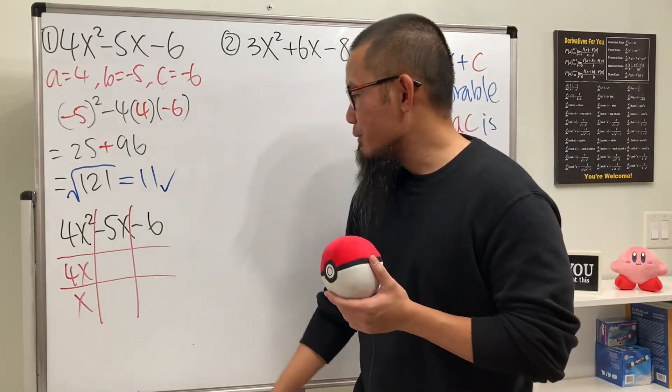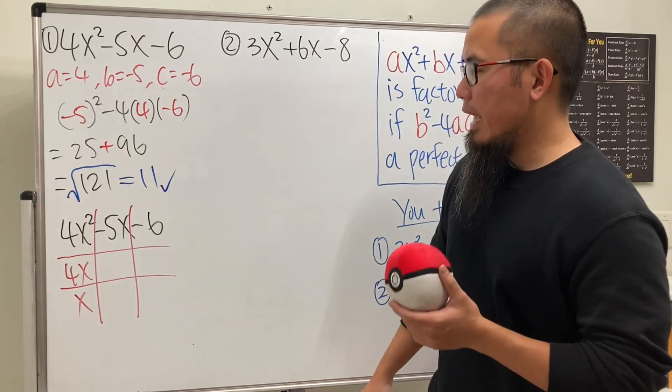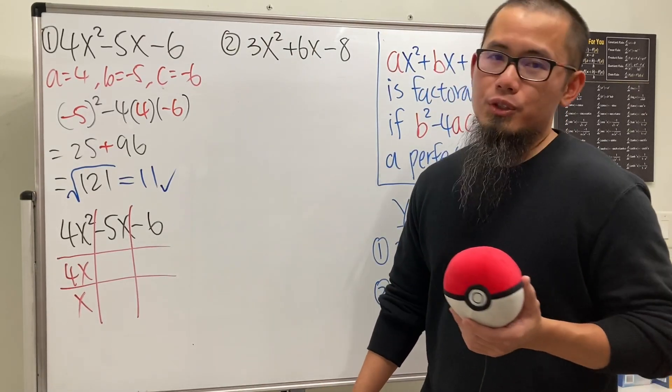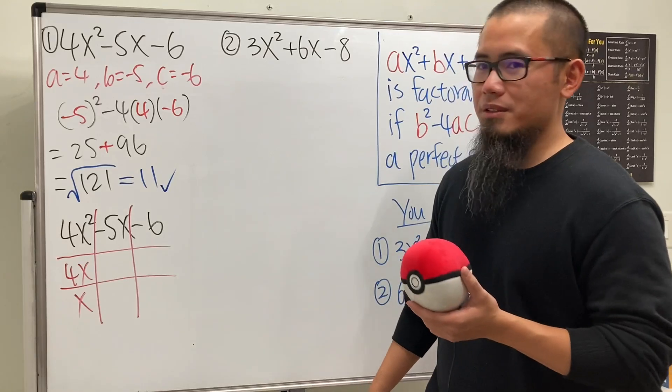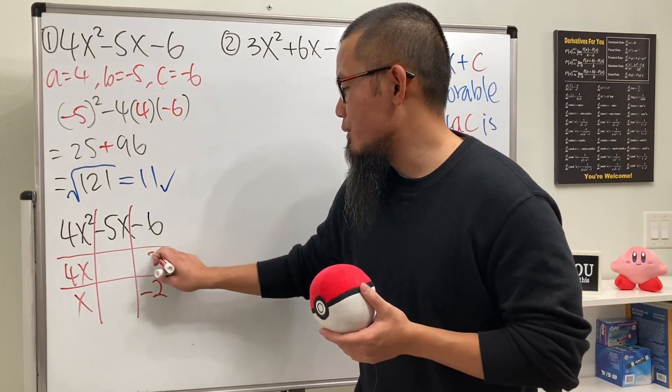But anyway, what times what gives us negative 6? We are going to use negative 2 and 3. You can try with like negative 6 and 1 and things like that, but let me tell you, negative 2 goes here and 3 goes right here.